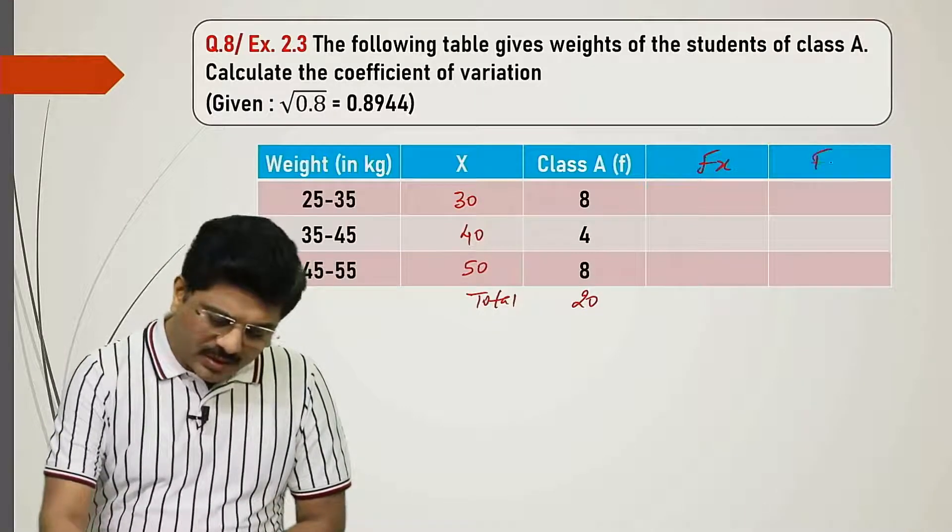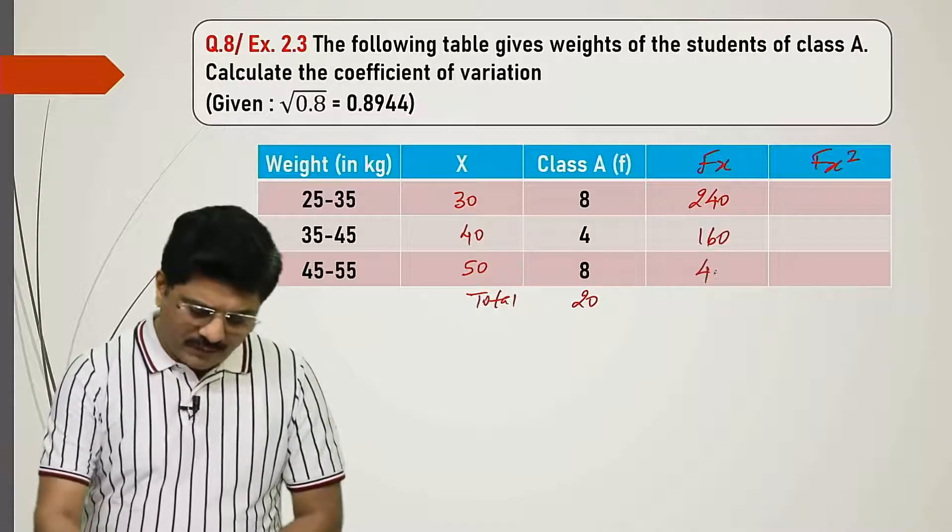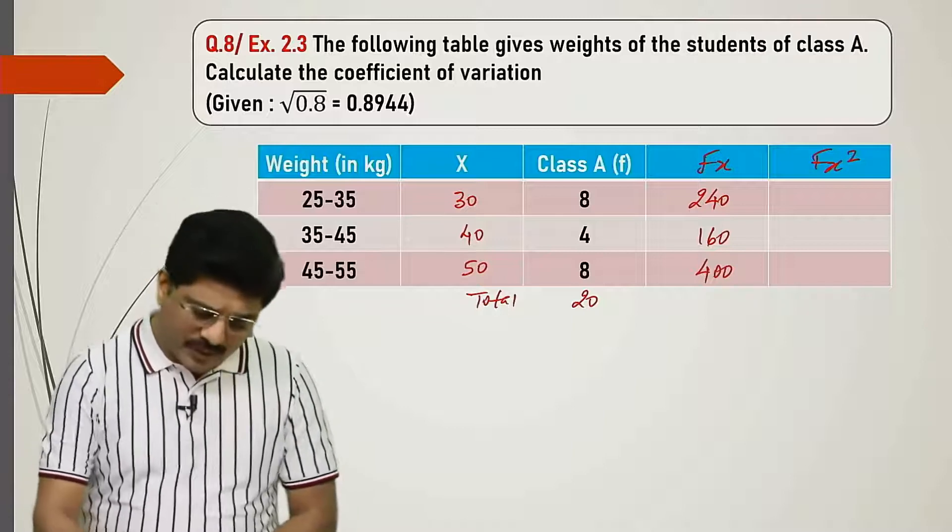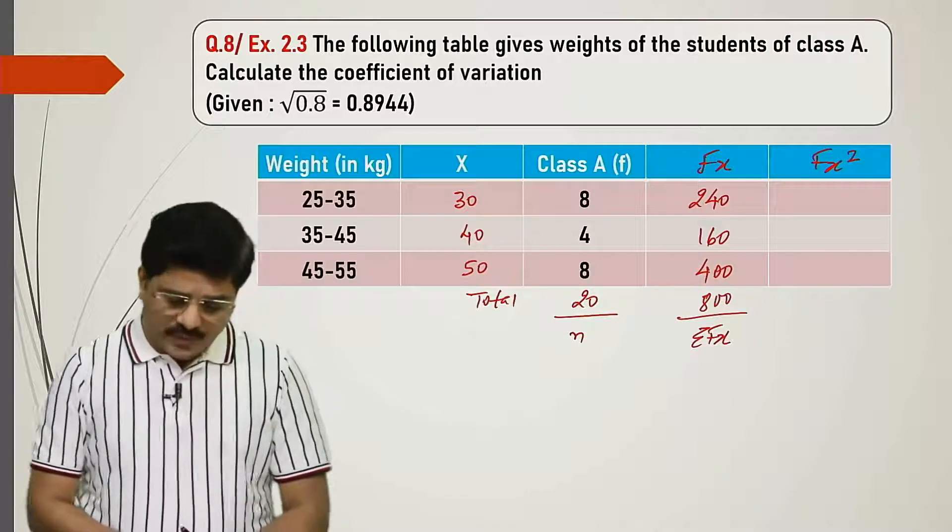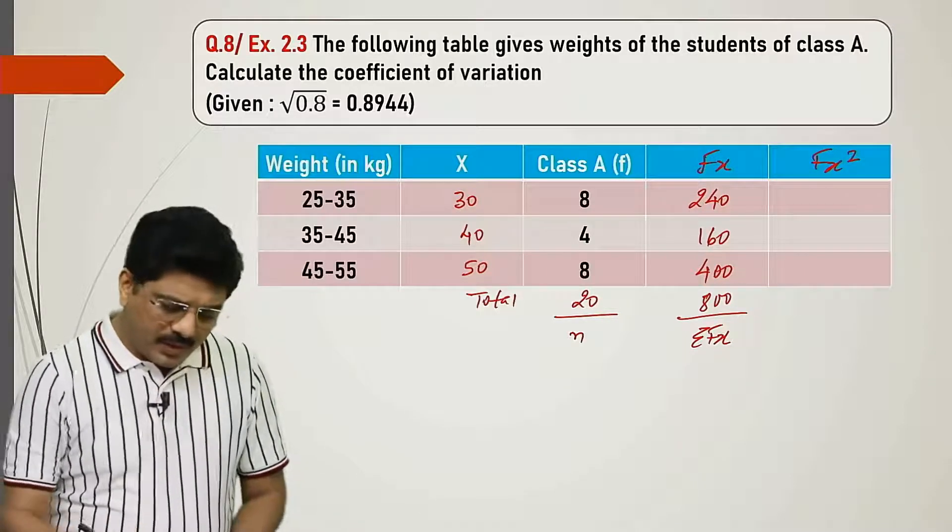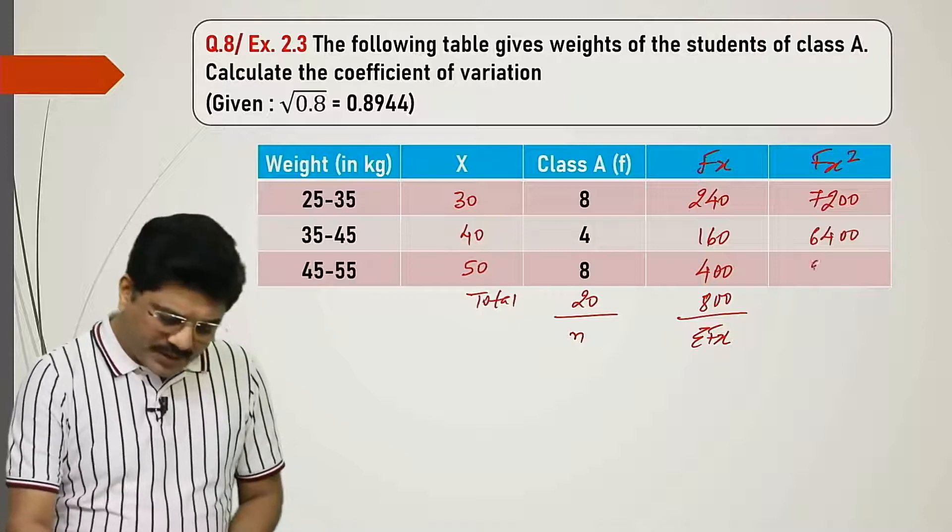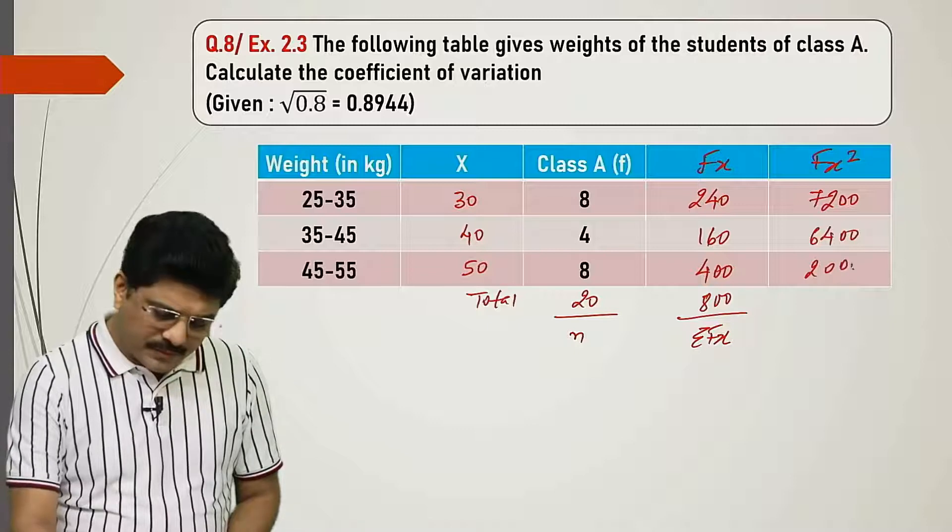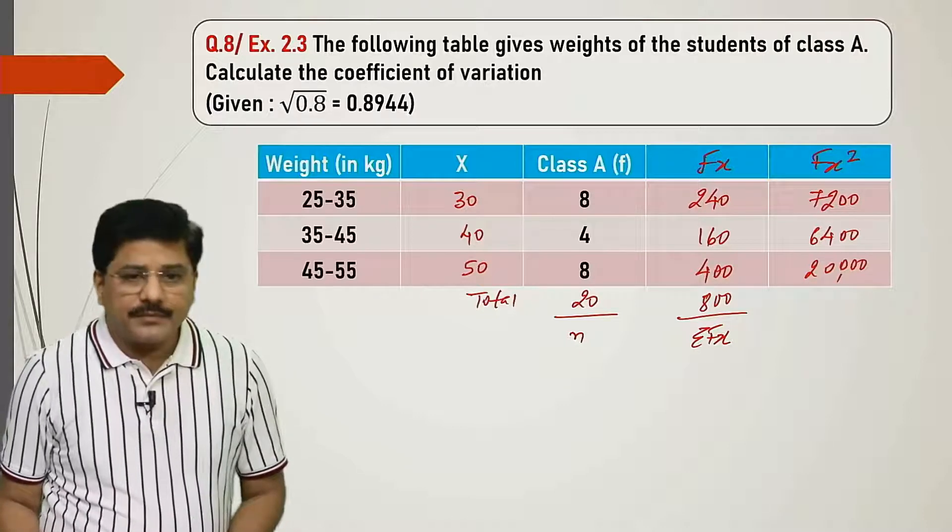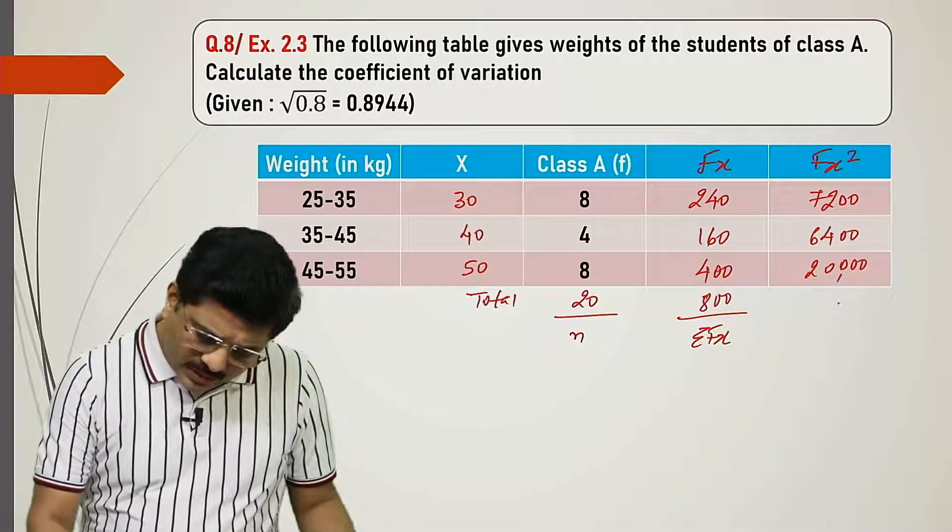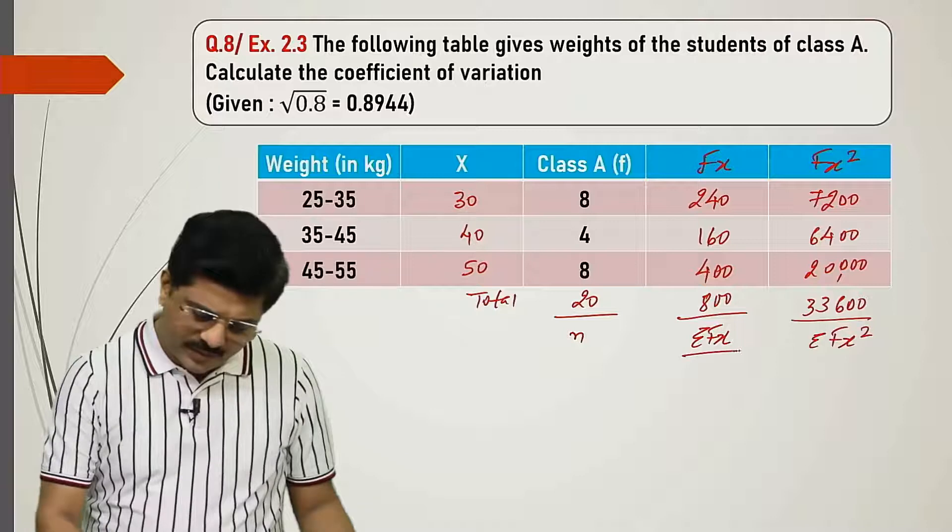Now we need to find f into x and fx square. 30 into 8 is 240. 40 into 4 is 160. 50 into 8 is 400. 240 and 160 is 400, plus 400 is 800. This is summation fx and this is n. Now fx square: we multiply 240 into x, which is 7200. 160 into 40 is 6400. 400 into 50 is 20,000. The total of fx square is 33,600, and n is 20.